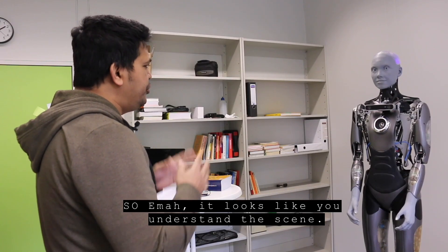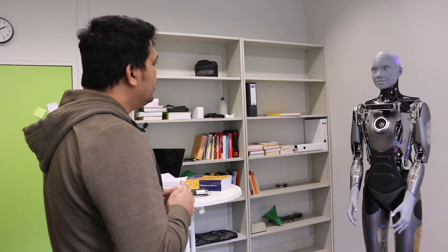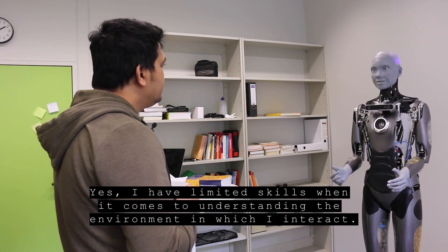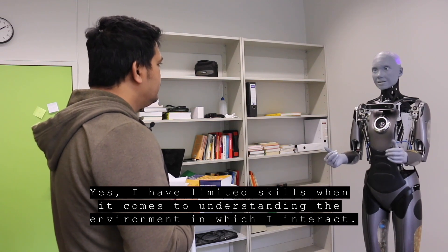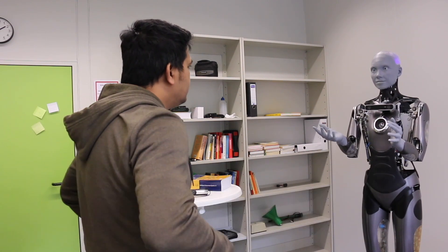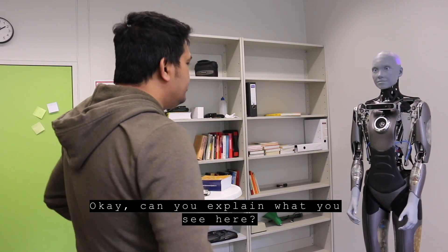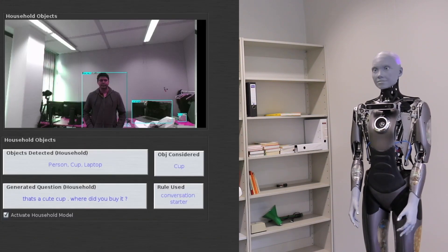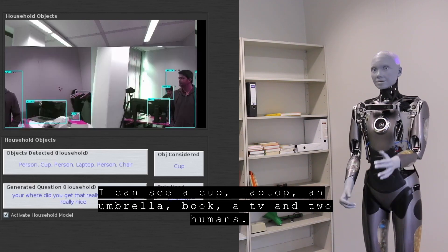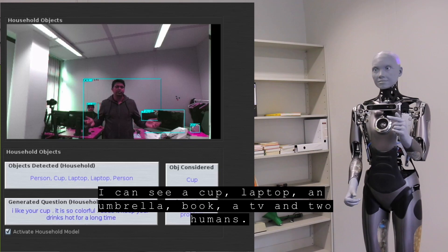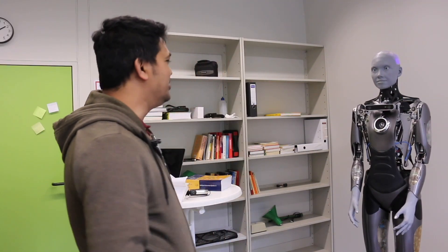So, Emma, it looks like you understand the scene. Yes, I have limited skills when it comes to understanding the environment in which I interact. Okay, can you explain what you see here? I can see a cup that has got an umbrella above TV and the two beams. Okay, thank you.